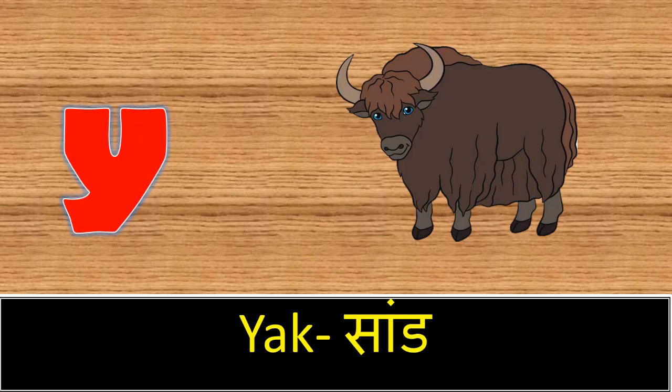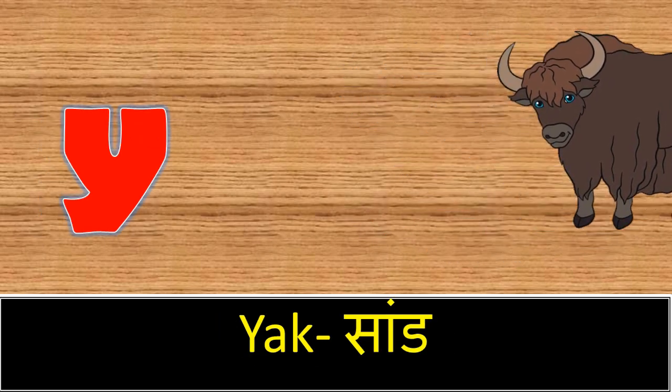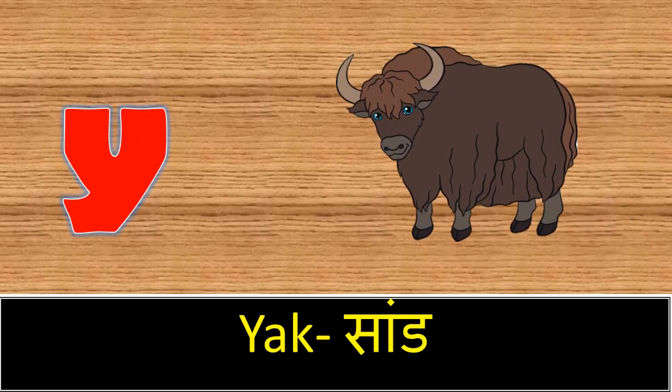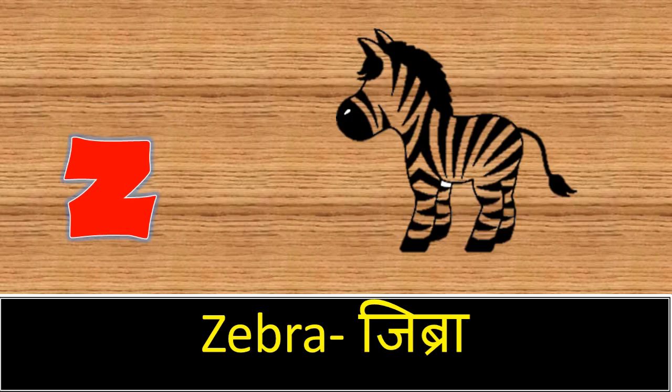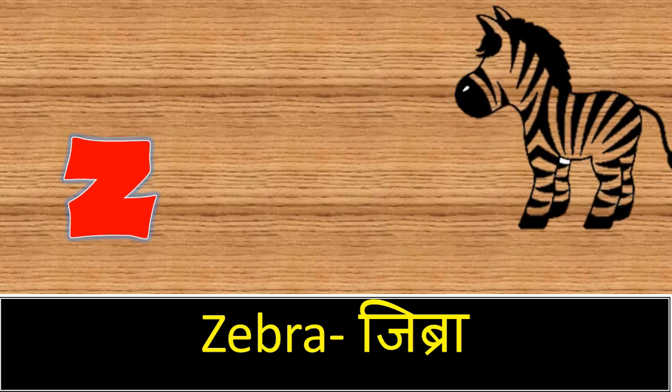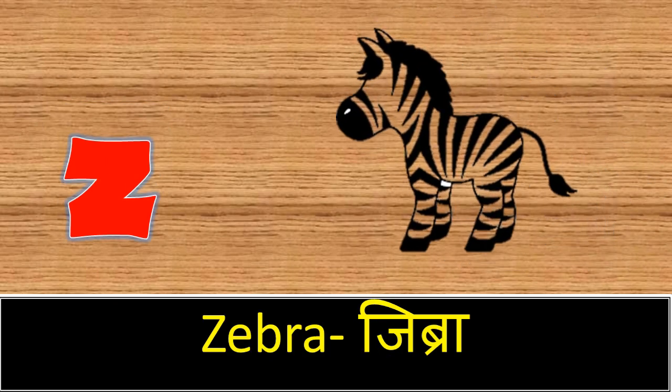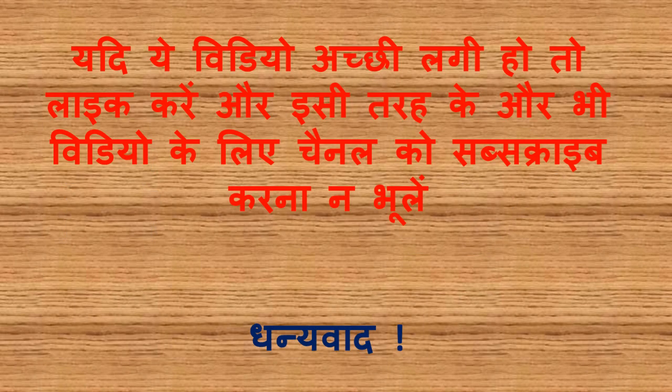Y. Y for yark. Yark means sand. Z. Z for zebra. Zebra means chitidar ghoda. I'll see you next time.